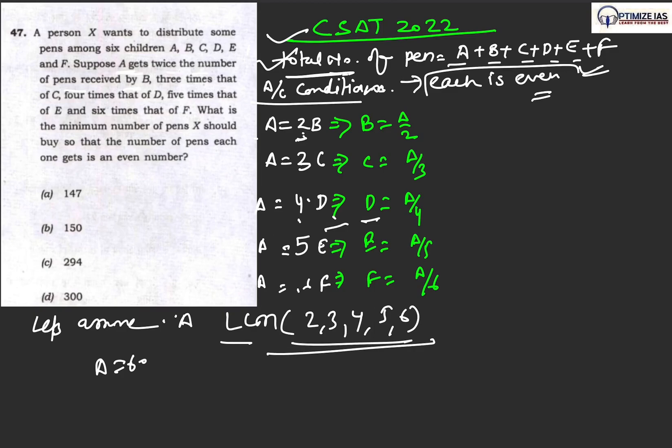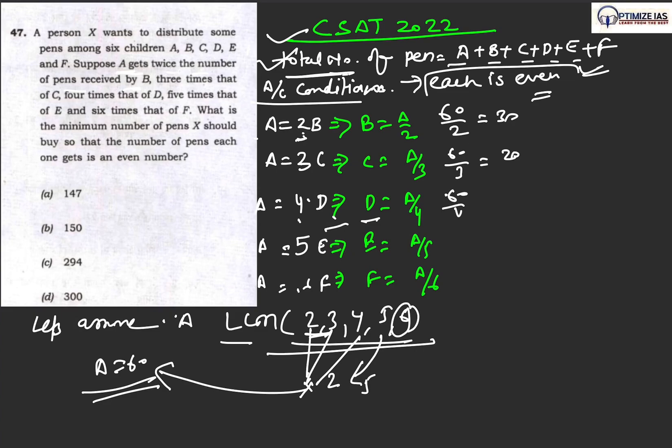Why? Because 2, 3, then here already 2 is there, so we count 2 here, and then here 5. This 6 is already covered between 2 and 3. So that is how we get the value of A as 60, which is LCM. The moment we get the value of A here as 60, we put it here and then we check.